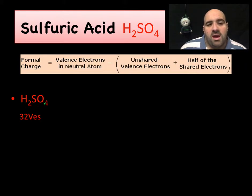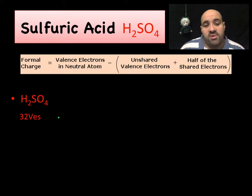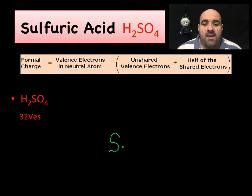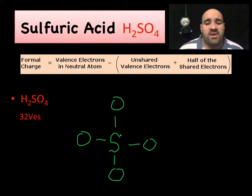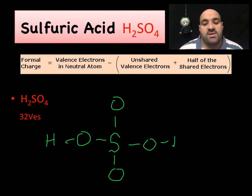Each hydrogen has one valence electron, each oxygen has four — that's 24 from oxygen — and sulfur also has six, since it's right below oxygen on the periodic table. So we're going to put sulfur in the middle and connect four oxygens. Then we're going to pick a random two oxygens to attach the hydrogens. Remember, hydrogens usually go on the outside and they connect to the oxygens.